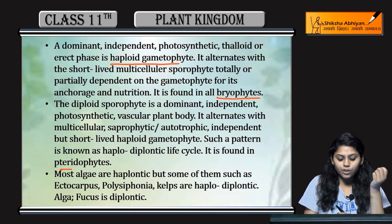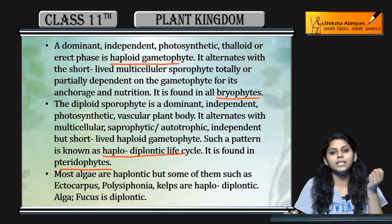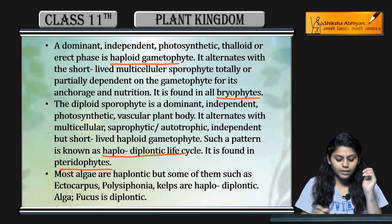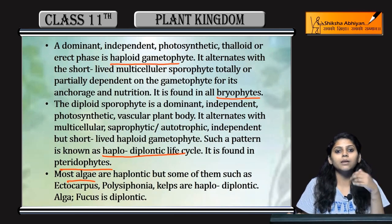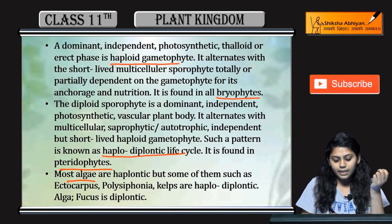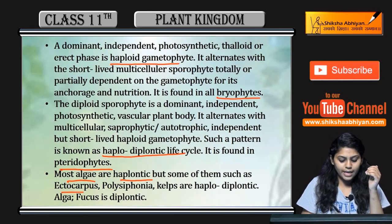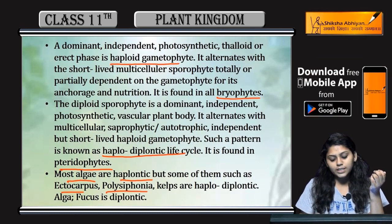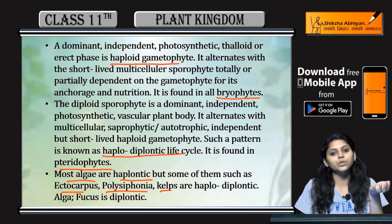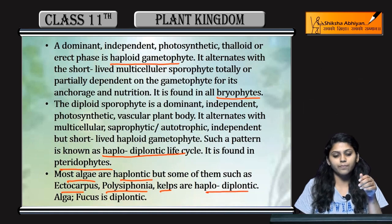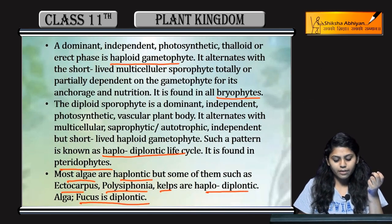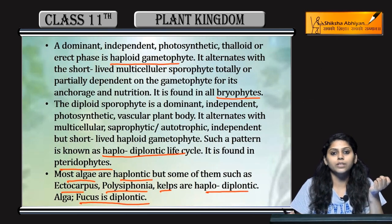In case of pteridophytes, the life cycle is haplodiplontic. Algae are mostly haplontic, but some of them — such as Ectocarpus, Polysiphonia, and kelps — are haplodiplontic, and some like Fucus are diplontic.